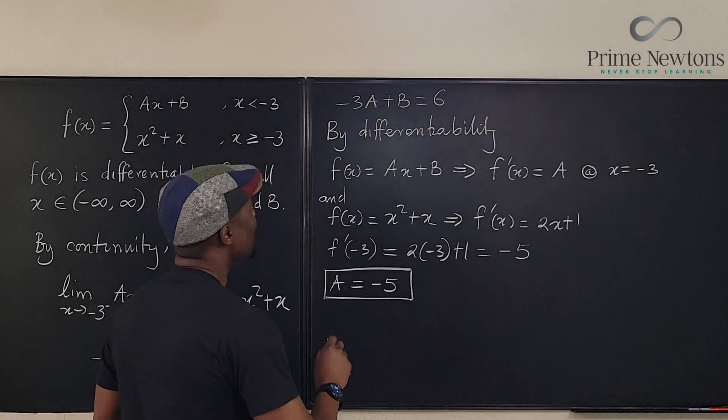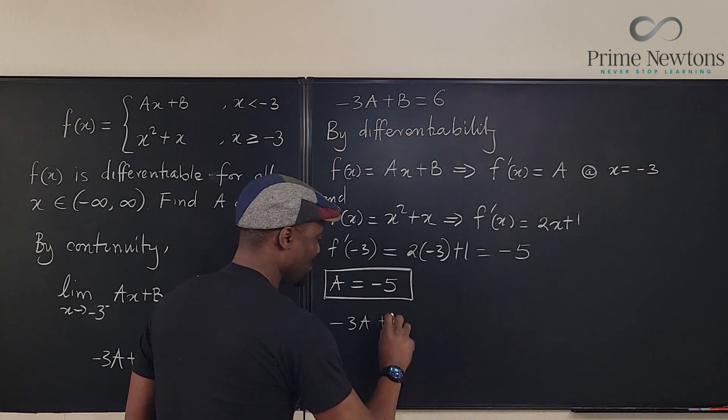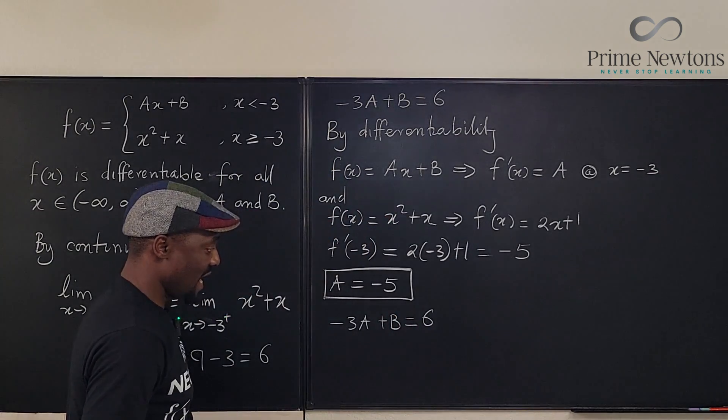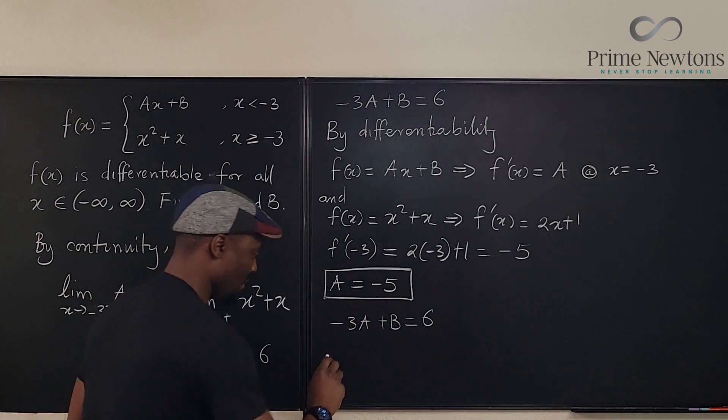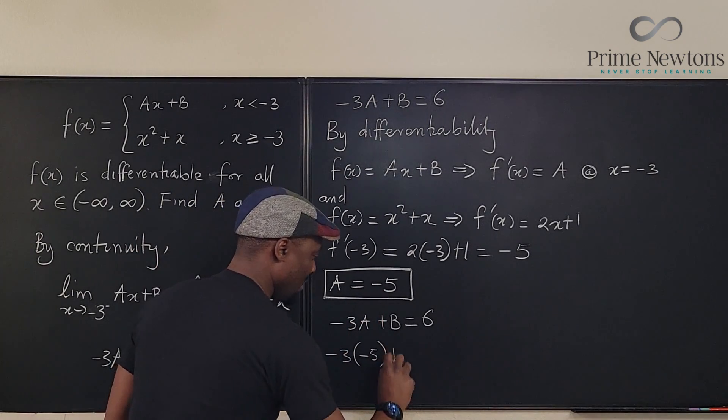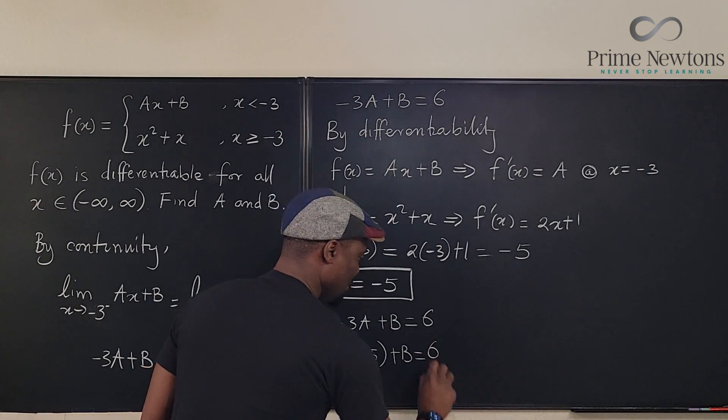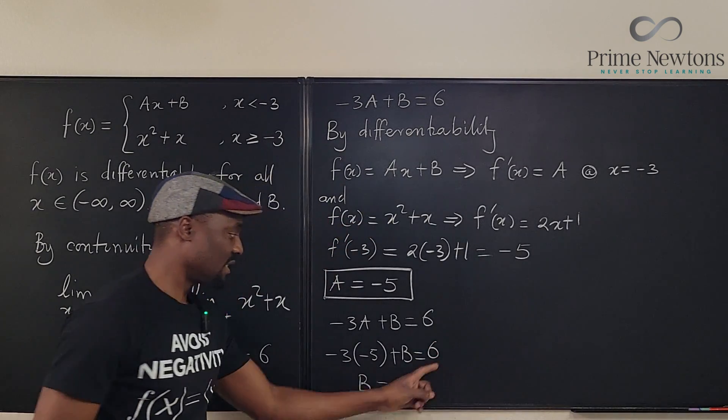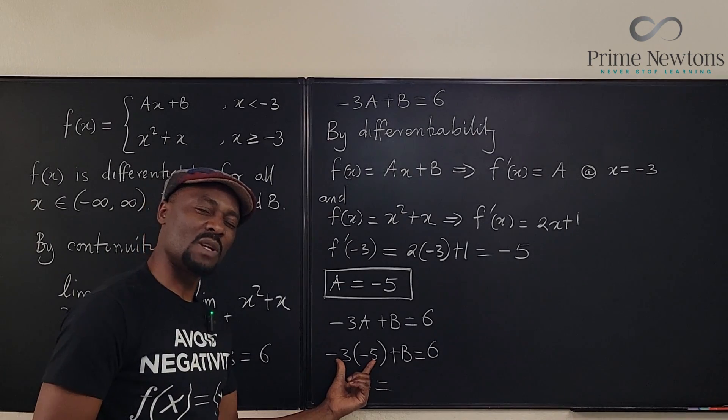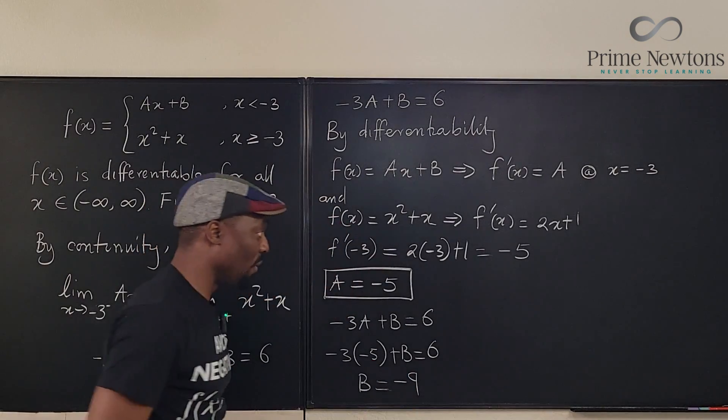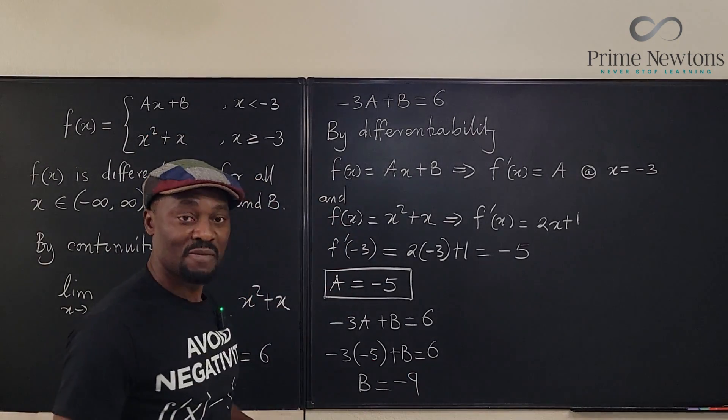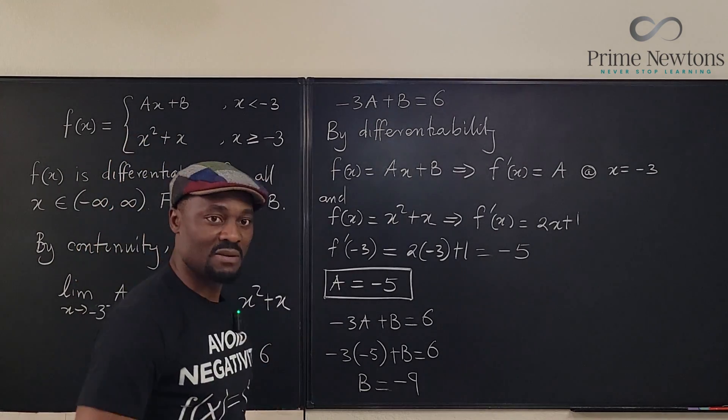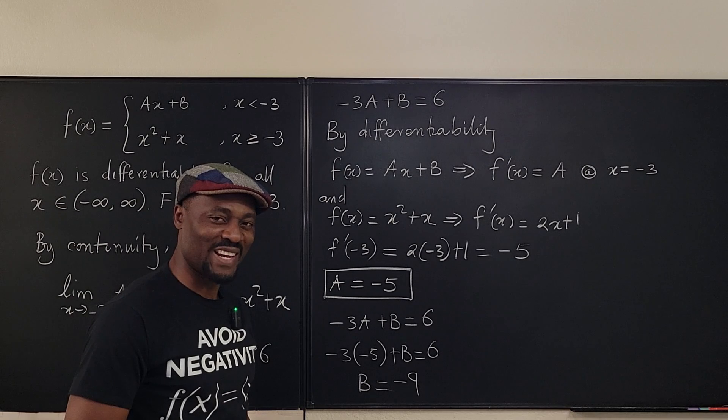So we know that minus 3a plus b is equal to 6. And we plug in minus 5 here, we have minus 3 times minus 5 plus b is equal to 6, which means b equals 6 minus 15. What's that? Negative 9. So our piecewise function is such that this is minus 5x minus 9, and this is x squared plus x. I wonder what the graph of that will look like.